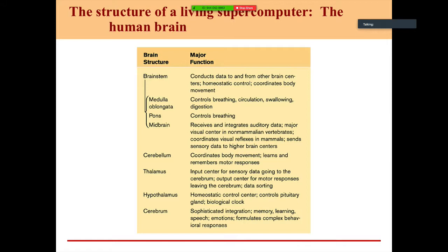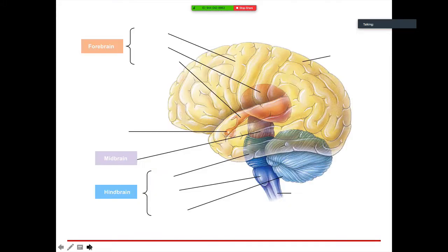The cerebrum handles sophisticated integration: memory, learning, speech, emotions, and complex behavioral responses. A well-developed cerebrum is what makes humans smarter than other animals. Looking at a diagram, you can see the forebrain makes up most of the brain volume, then the midbrain in between, and the hindbrain — with pons, cerebellum, and medulla — at the back.